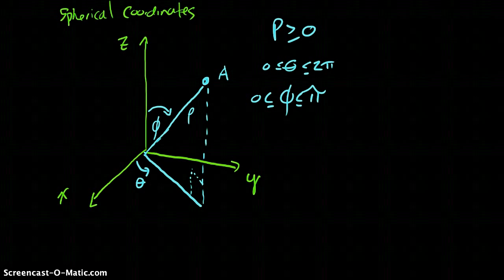And I'm going to put the restriction for phi as 0 to pi. So this is enough to describe any point in space.